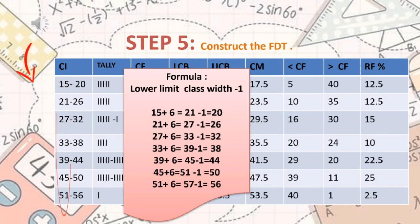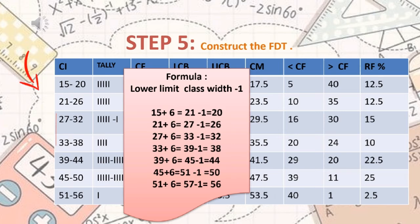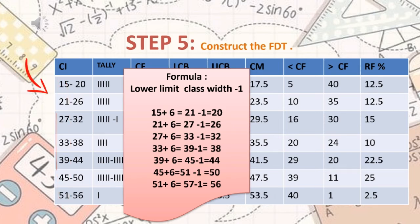Next, to get the lower class limit for subsequent rows, we add the class width to the starting point, then enter the upper class limit accordingly.